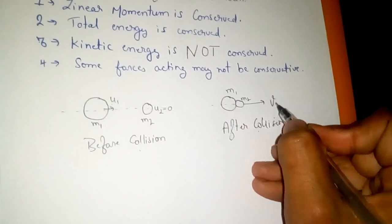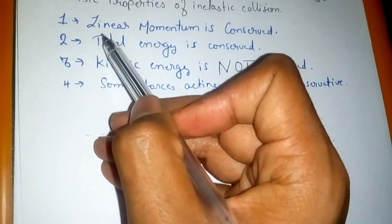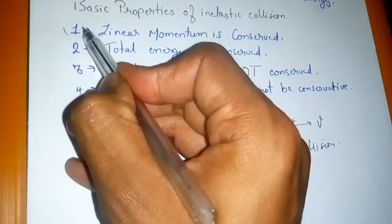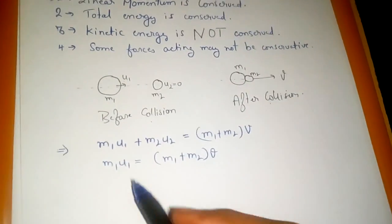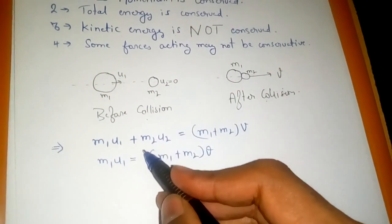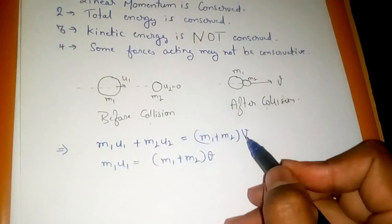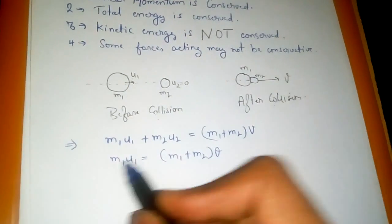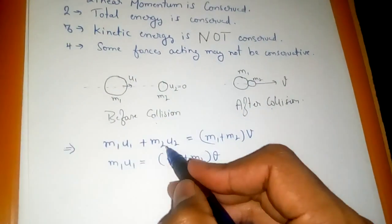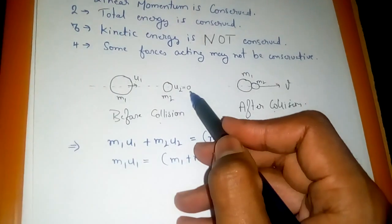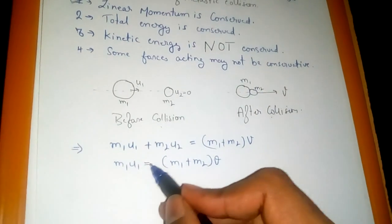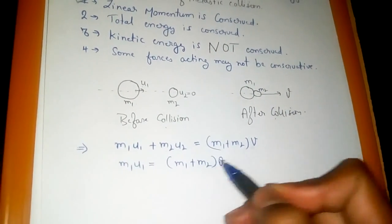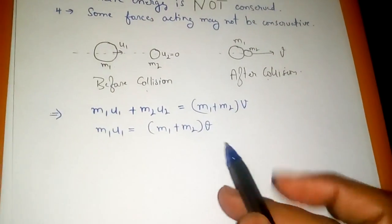Using the first property that is linear momentum is conserved, we get this equation: m1 u1 plus m2 u2 is equal to m1 plus m2 into v. When u2 is taken as zero since it is stationary, the equation becomes m1 u1 is equal to m1 plus m2 into v.